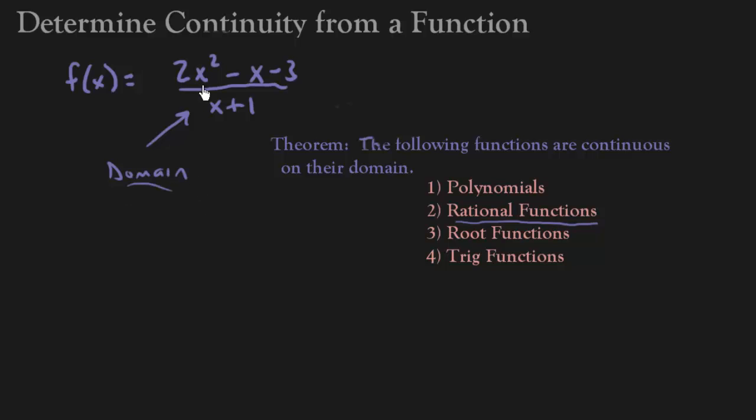And we've done a couple of these already. The domain, basically you can plug anything you want into here, right, that's just a normal polynomial, but we can't plug anything we want into this because it's on the denominator. So we can say that the function is continuous on the interval from negative infinity to negative 1 and then from negative 1 to infinity.